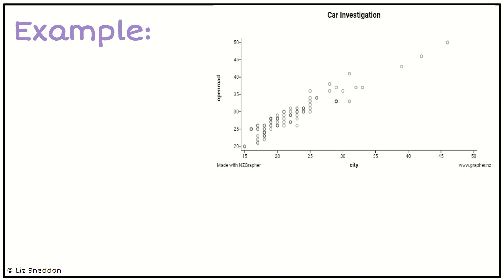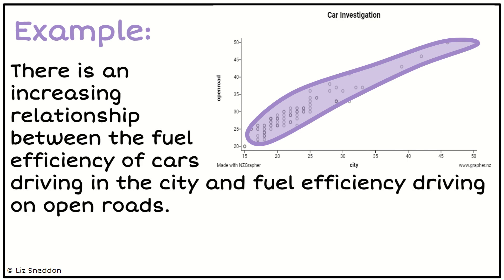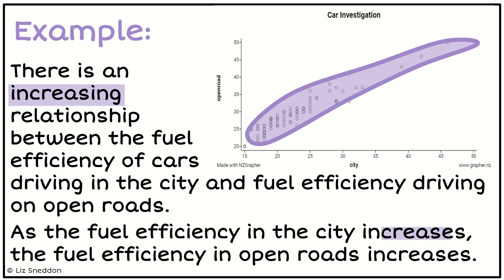Let's look at an example. This is looking at the fuel efficiency of cars when they are driving on city roads versus on the open roads. The first thing I want to do is draw a blob around my data to identify the pattern, then think about whether it is increasing or decreasing. In this case I have an increasing relationship between fuel efficiency in the city and fuel efficiency on the open roads. Notice how I've got both numeric variables and I've explicitly talked about it being increasing.